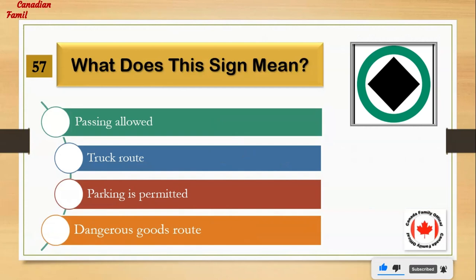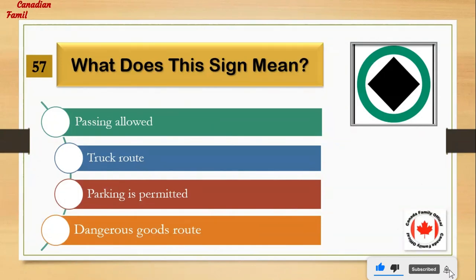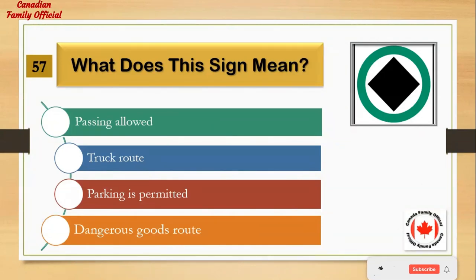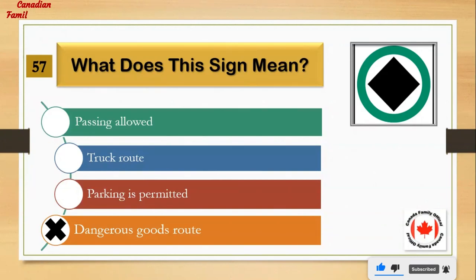What does this sign mean? Number 1: passing allowed. Number 2: truck route. Number 3: parking is permitted. Number 4: dangerous goods route. And the answer is: dangerous goods route.